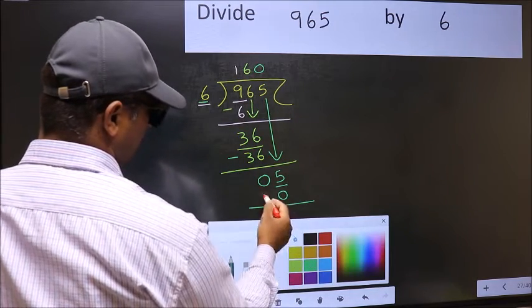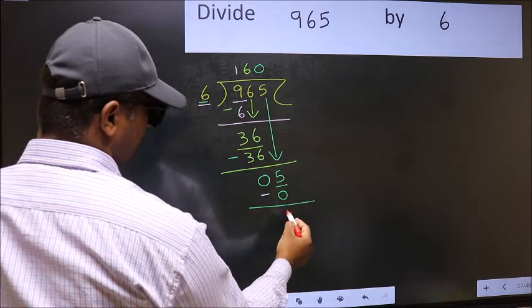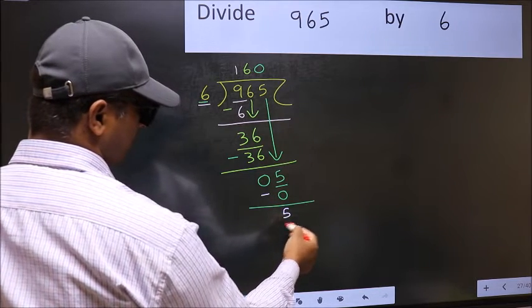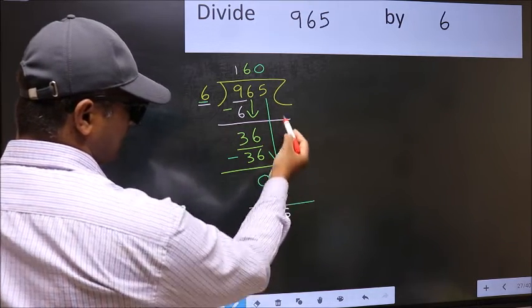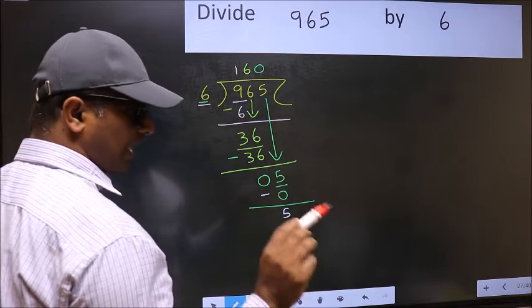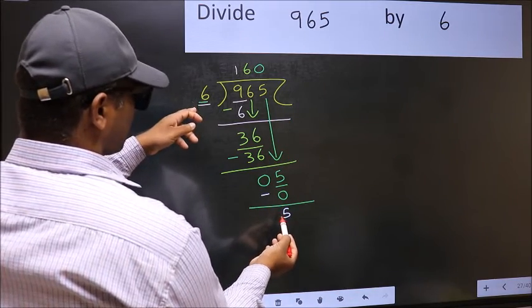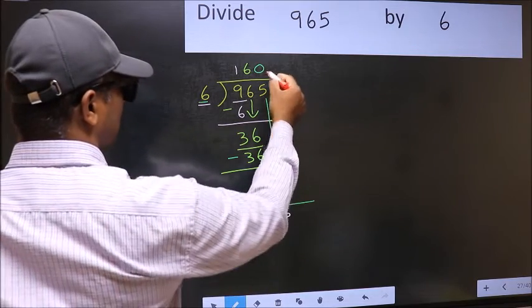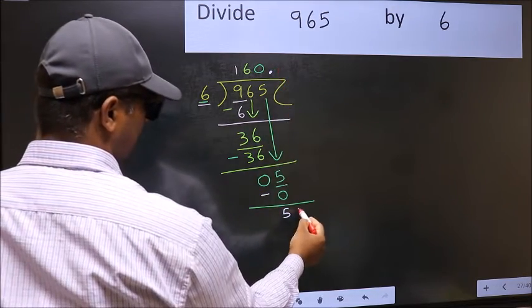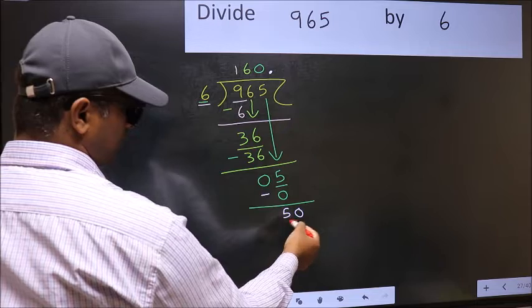Now you should subtract. 5 minus 0 is 5. Over here, we did not bring any number down, and 5 is smaller than 6. So now you can put a dot and take 0. So 50.